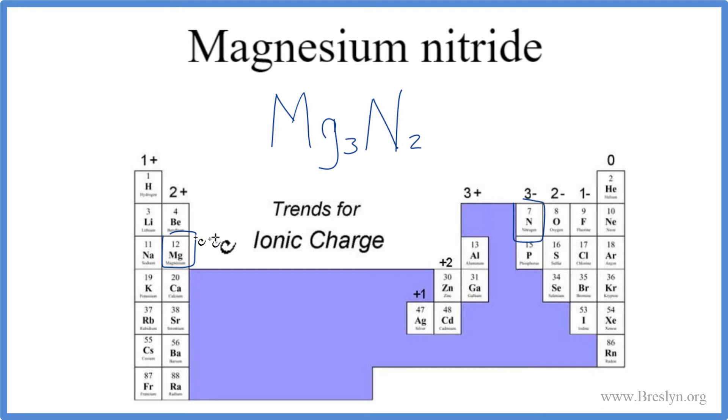So I'll put the charges back in. We said magnesium group two, two plus, nitrogen over here is three minus. And this should be neutral. The charge on the magnesium and the charge on the nitrogens here, they should be equal. Three times two plus, that's a six plus. Two times three minus, that's six minus.